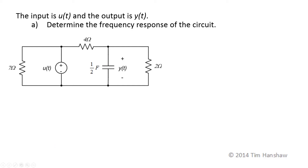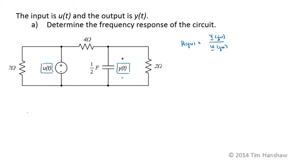We need to determine the frequency response of this circuit. The input is this voltage source, U of t, and our output is the voltage across this capacitor, Y of t. Since it's a frequency response, what we're looking for is a steady-state sinusoidal analysis, and we want H of j omega, which is the ratio of the output voltage phasor to the input voltage phasor, both as a function of frequency. So let's convert this circuit to the frequency domain.